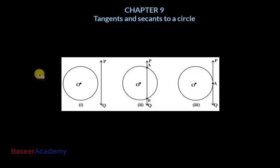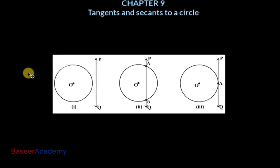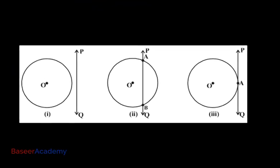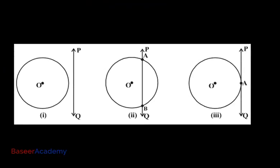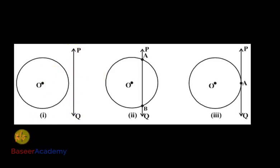In this figure, I have a circle and a line. There are three possibilities here. The circle and the line may not intersect — like here in case one, the line PQ is not intersecting the circle. So I can say that the line PQ is non-intersecting here.